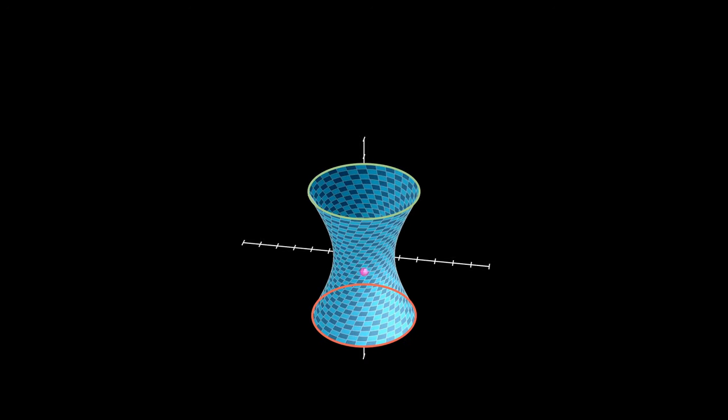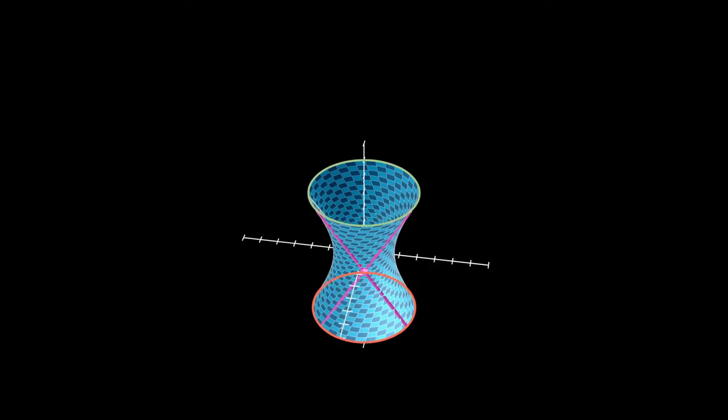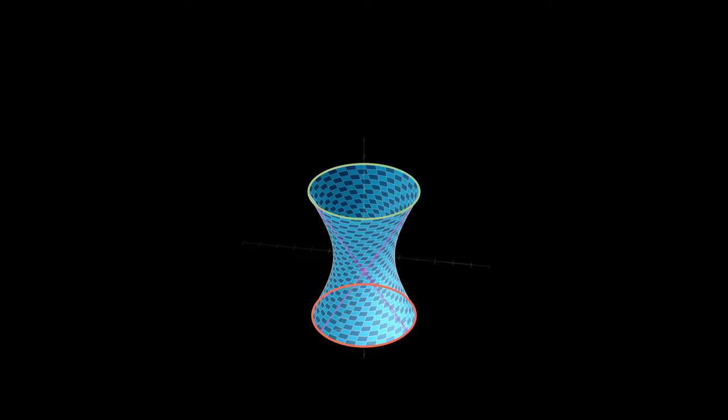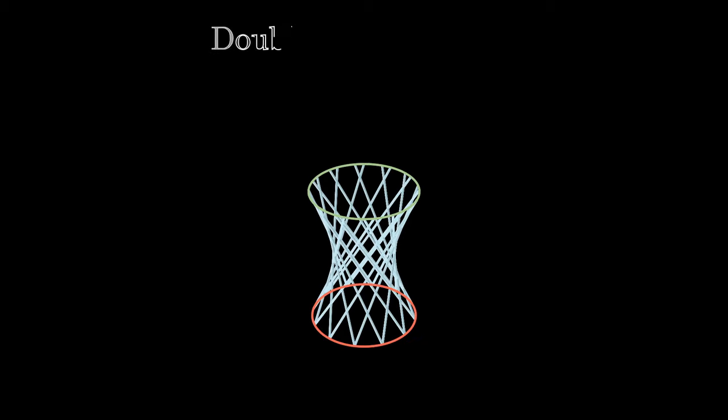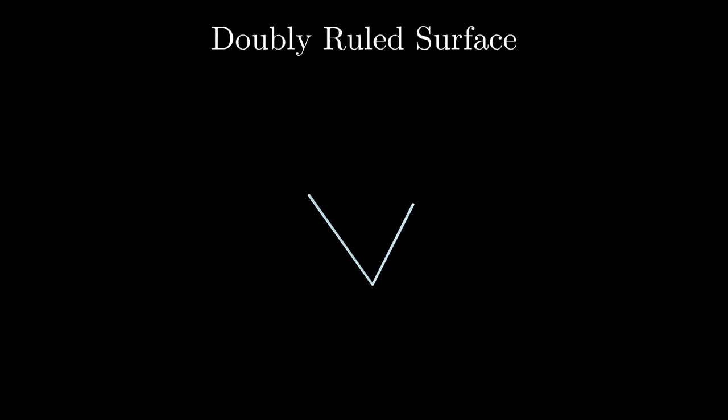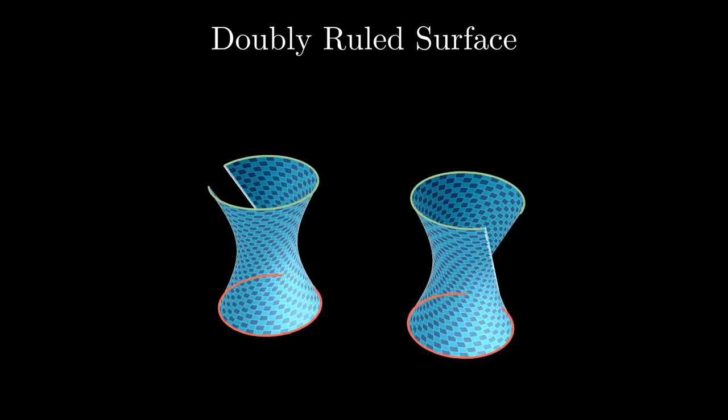Hyperboloids are special because there are not one, but two distinct lines that go through any point on the surface. A hyperboloid has two distinct rulings that lay on it, making it a doubly ruled surface. This means that there are two distinct lines that you can wave around and make the same surface with.